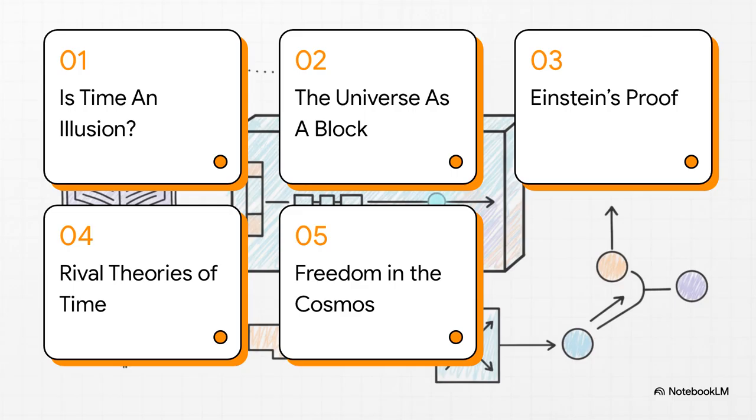First up, we'll explore why we're even asking if time is an illusion in the first place. Then, we'll define what exactly the block universe is. After that, we'll get into the really shocking stuff, the proof coming straight from Einstein. We'll also check out some rival theories and finally, we'll wrestle with the big one. What does this all mean for free will in a cosmos that might already be finished?